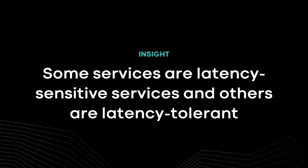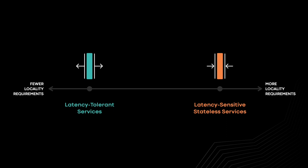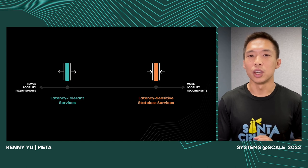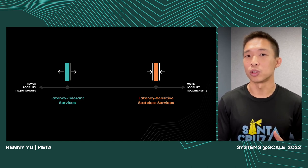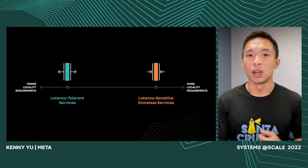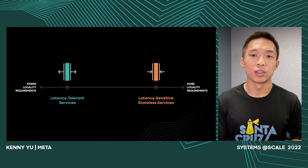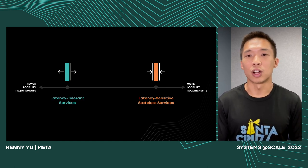For supporting global services, we observed that there are two common types of services: services that are latency sensitive, and services that are latency tolerant. When you use Meta's products like the Facebook or Instagram apps on your phone, you expect a fast response when loading photos and videos — those are latency sensitive. However, some parts of our products are latency tolerant. For example, when a friend comments on your video, it might be okay to receive that notification a few seconds or minutes late. Or when you upload a large video, it's okay to wait a few minutes for it to be uploaded and processed.